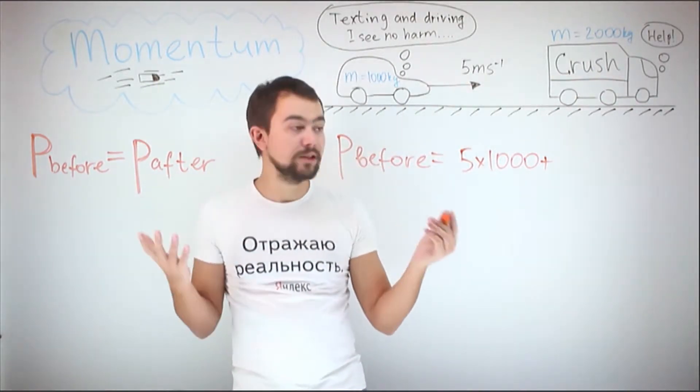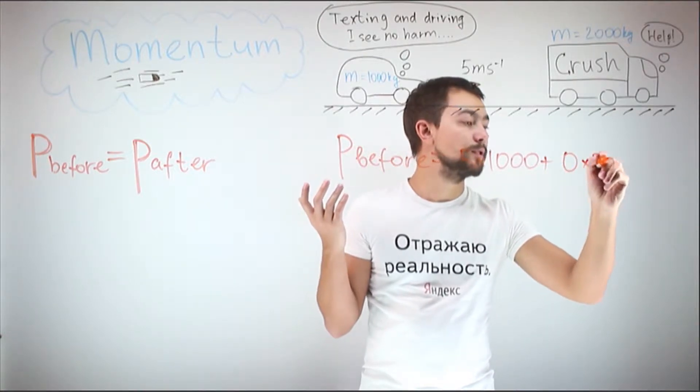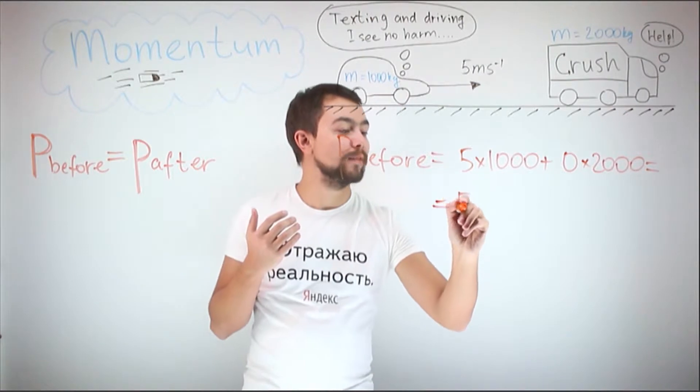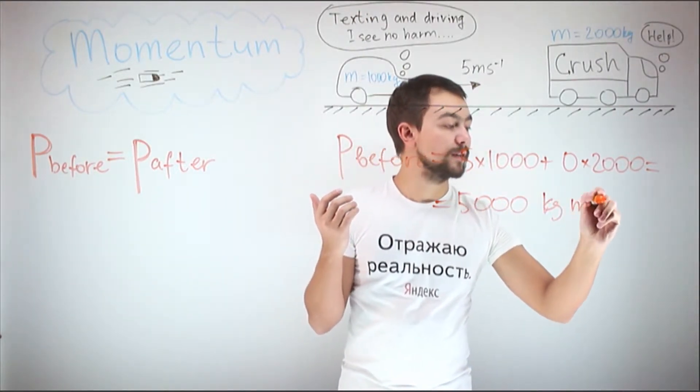Which means the momentum is 0. So it's 0 times 2,000, so it's 5,000 kilogram meters per second.